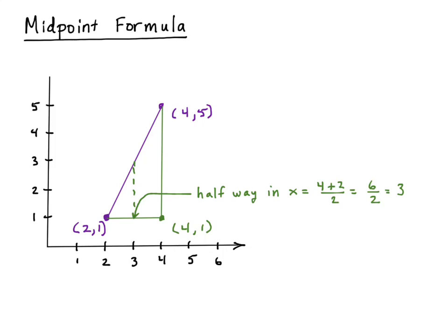If we do the same thing on the y-axis, we can get the halfway point in y. We're going from a y of 1 up to a y of 5, so we take the average between those two. That would be (5 + 1)/2 which is 6/2, which is 3. Coincidentally 3, actually. So the midpoint is at the coordinates (3,3).